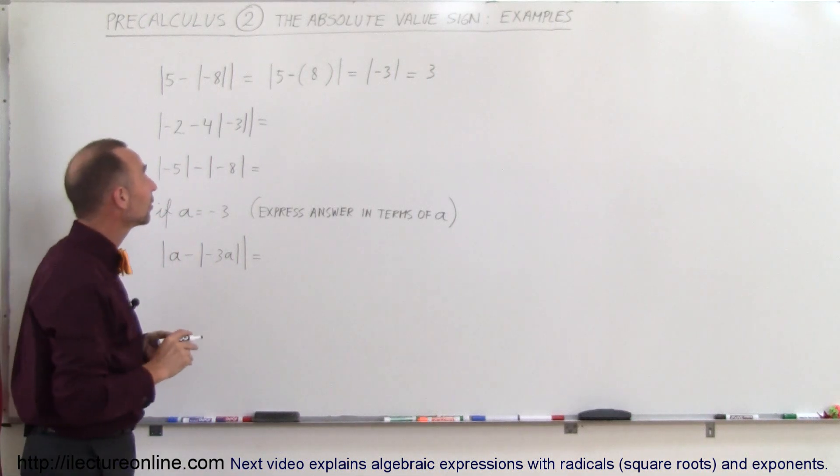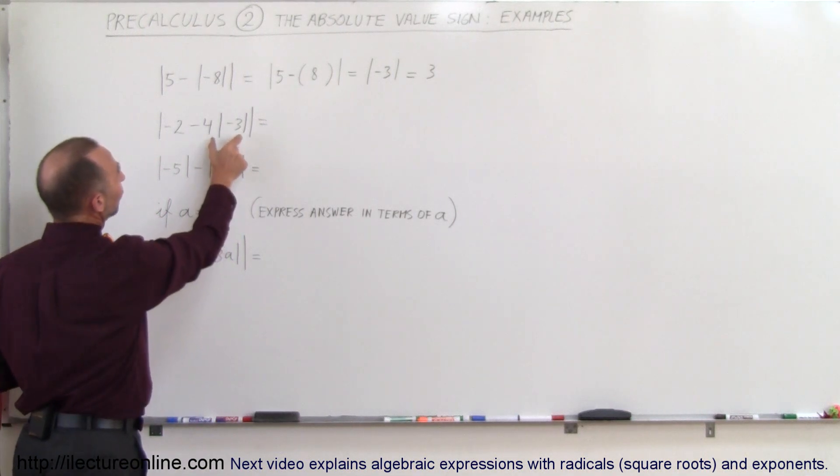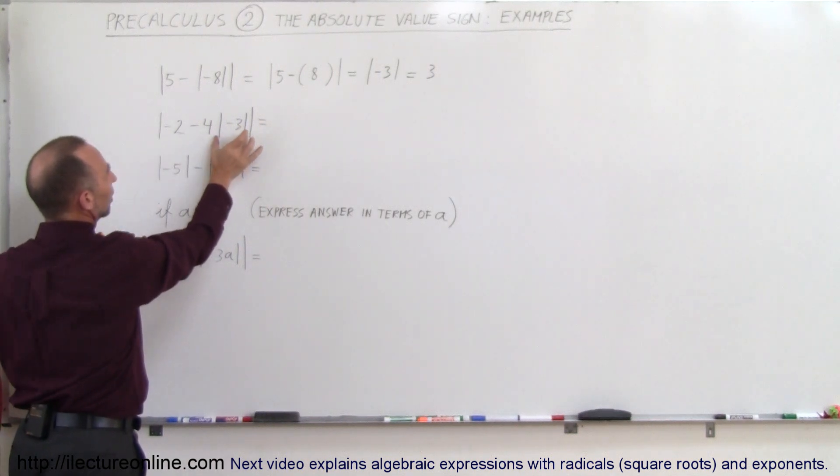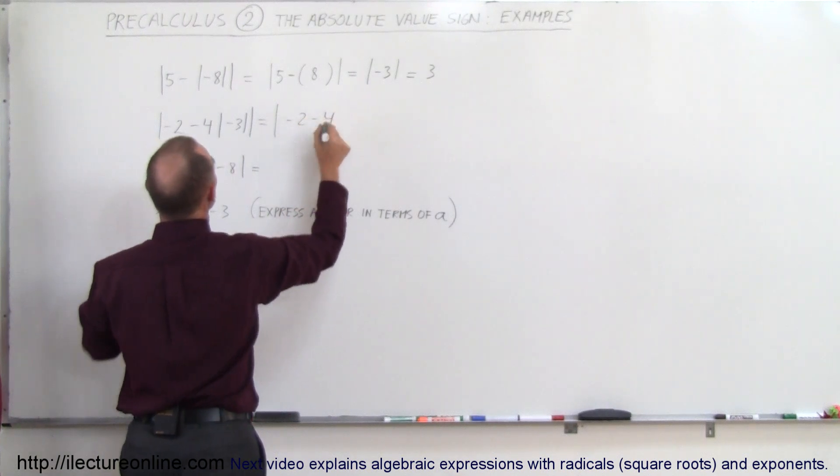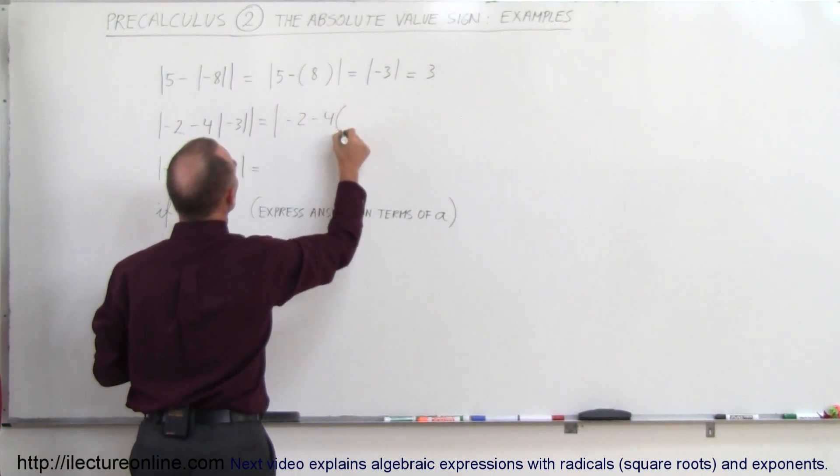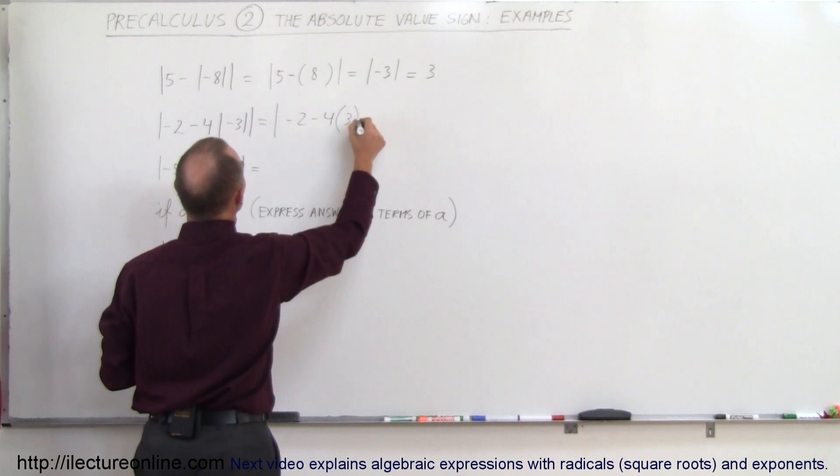Alright, on our second example, it's a little bit different. Again, you have the absolute value symbol inside another absolute value symbol, so let's solve that one first. This becomes the absolute value of minus 2 minus 4 times what's there, and I'll use parentheses—that will become a positive 3.